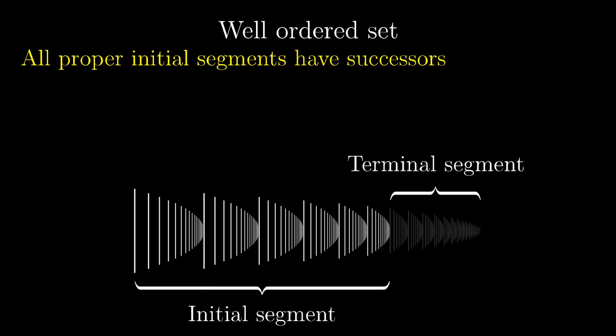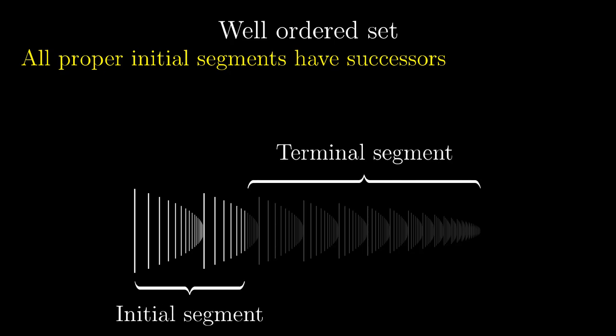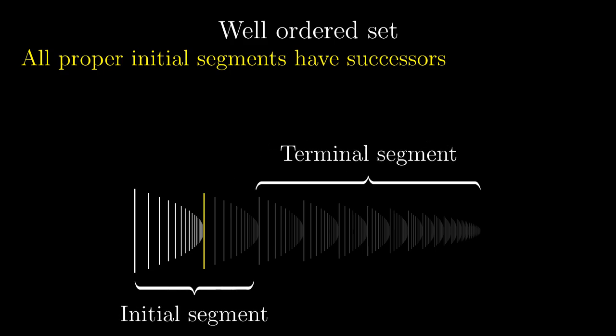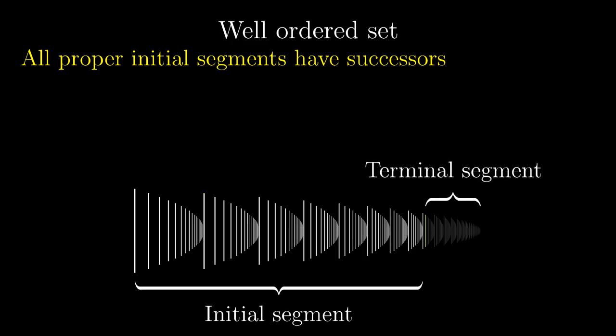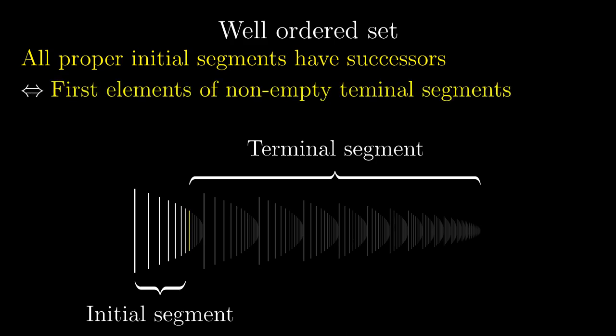From this point of view, a proper initial segment corresponds to a non-empty terminal segment. A successor of an initial segment corresponds to the first element of appropriate terminal segment. So a set is well-ordered if and only if all the non-empty terminal segments have their first elements.